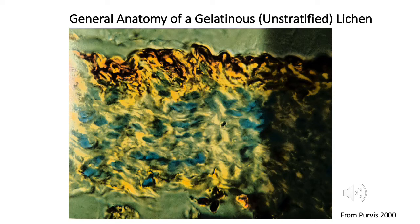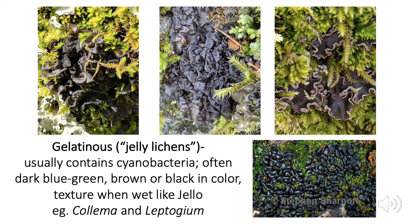In contrast, a gelatinous foliose lichen — sometimes called a jelly lichen — is unstratified because there aren't clear, neat layers inside. Here, the photobiont (which is cyanobacteria) is spread throughout the whole thallus. Gelatinous lichens are, as far as I know, all cyanolichens, meaning they have cyanobacteria as their photobiont, though not all cyanolichens are in turn gelatinous. The cyanobacteria appear more bluish-green than the green algae in other cross-sections — which makes sense, since an alternative name for cyanobacteria is blue-green algae, although they are in fact bacteria and not actually algae at all. On the outside, these lichens are usually dark in color and when wet they look wet and squishy, kind of like jello.